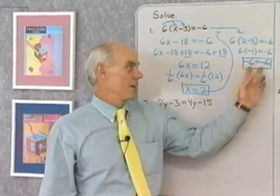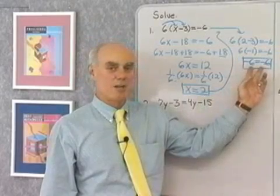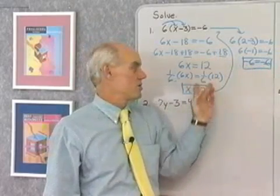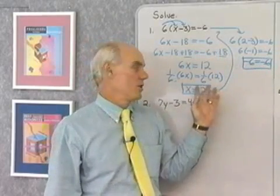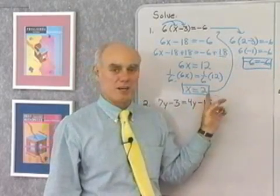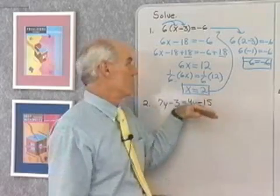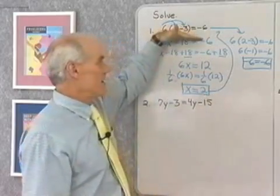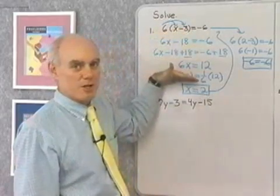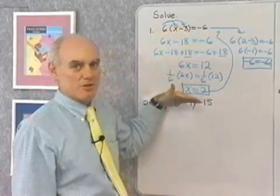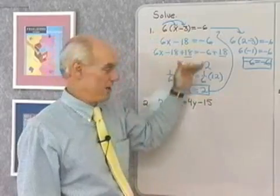If I found a false statement, I would go back and check my work to see where I had made a mistake and gotten the wrong solution. Simplify each side first, then the addition property, then the multiplication property — there's your solution. Check it.